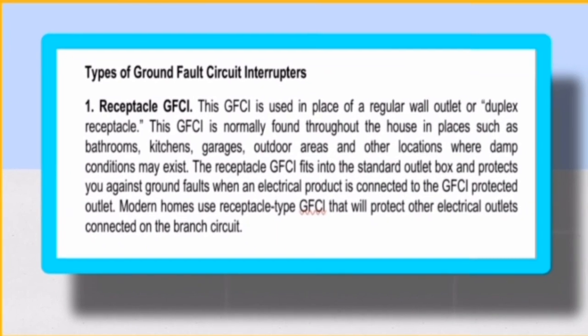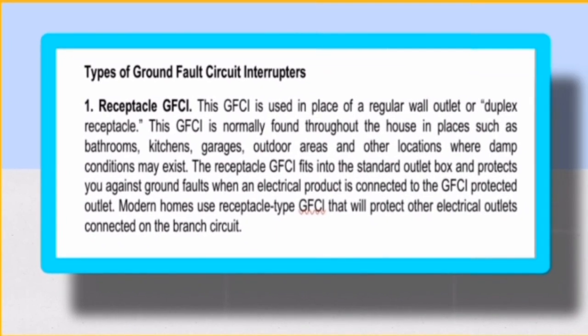Types of ground fault circuit interrupters. Number one: Receptacle GFCI. This GFCI is used in place of a regular wall outlet or duplex receptacle. It is normally found throughout the house in places such as bathrooms, kitchens, garage, outdoor areas, and other locations where damp conditions may exist. The receptacle GFCI fits into the standard outlet box and protects you against ground fault when an electric product is connected to the GFCI protected outlet. Modern homes use receptacle type GFCI that will protect other electrical outlets connected on the branch circuit.